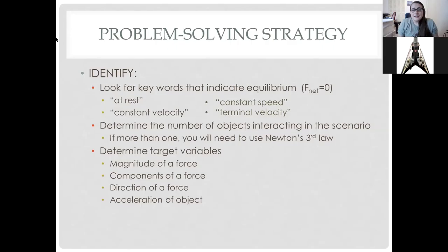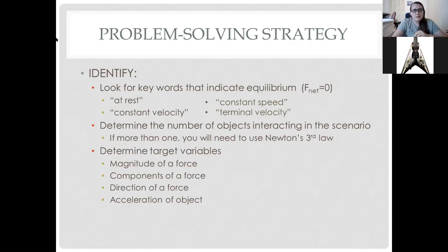Next, identify the number of objects interacting in the scenario. In a previous example we had two blocks on a table — the blocks interacted with each other, with the table, and gravity pulled on both. If there are more than one object in the scenario, you'll need to use Newton's third law: for every action there's an equal and opposite reaction. Then determine the target variables — the size of a force, its x and y components, the direction the force acts, or the acceleration of an object.